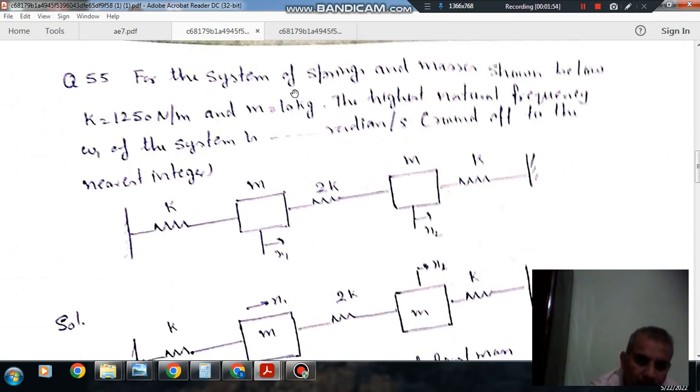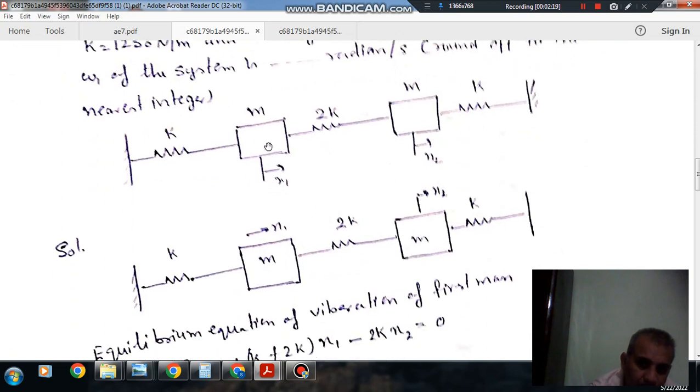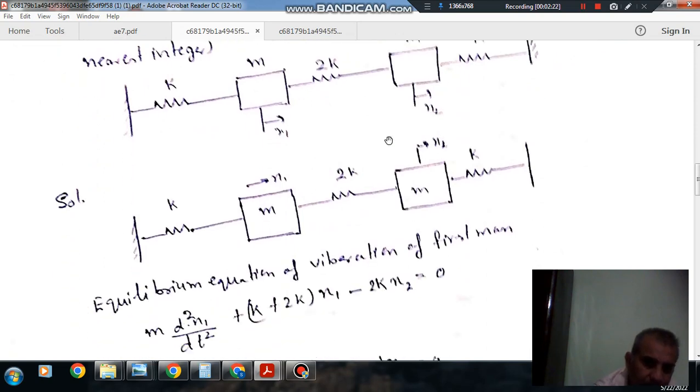For the system of springs and masses shown below, k is equal to 1250 N per meter and M is 10 kg. The system has: this is k, this is 2k, this is k, this is mass m, this is mass m, this is x₁, this is x₂. x₁ is the position of mass 1 and x₂ is the position of mass 2.